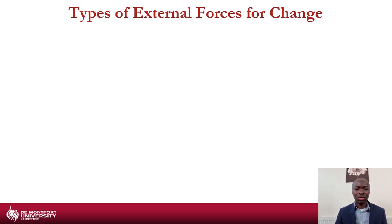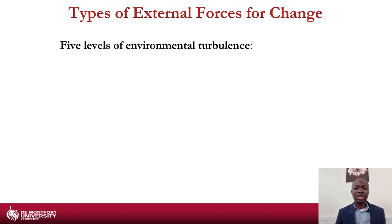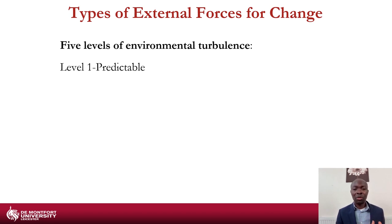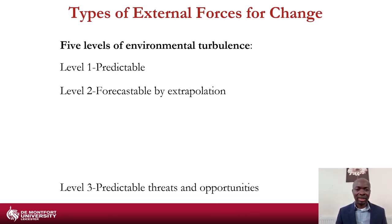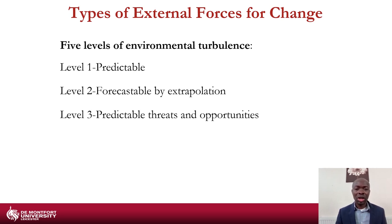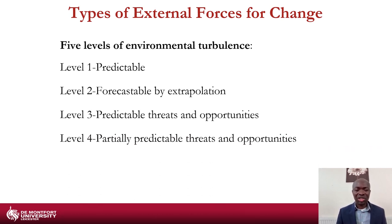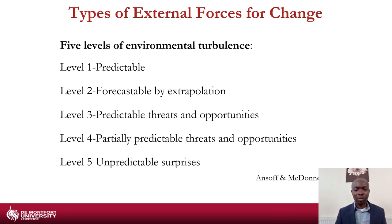There are five levels of environmental turbulence that have been identified in terms of external forces for change. You could be looking at some form of external forces that are predictable, or forecastable by extrapolation — where you can extrapolate what has happened before and forecast what is more likely to happen. You can also look at predictable threats and opportunities, partially predictable threats and opportunities, and at level five, the unpredictable surprises that happen in the business environment.